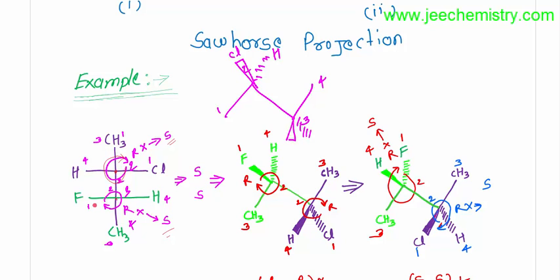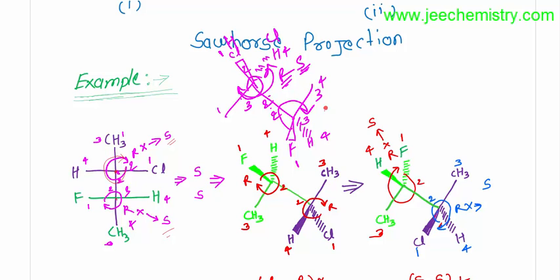This is a wedge, this is a dash. We can put chlorine here for this case. This is a chlorine, this is a hydrogen. Suppose fluorine here, hydrogen there — you have to find the R/S configuration. If it does not match the R/S configuration, we have to change the positions of chlorine and hydrogen to match the R/S configuration of these compounds. Now provide numbering: one, two, three, four. It rotates one, two, three — this is R format. But our answer is S, so this carbon should be S.